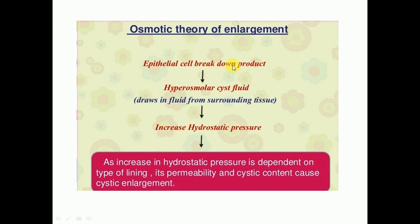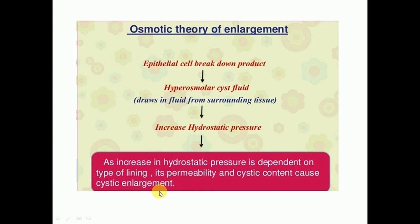Epithelial cell breakdown products lead to hyperosmolar cystic fluid, which draws in fluid from the surrounding tissue, leading to increased hydrostatic pressure. An increase in hydrostatic pressure, dependent on the type of lining, its permeability, and cystic content, causes cystic enlargement.